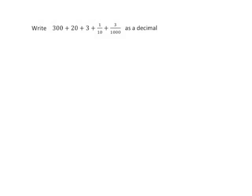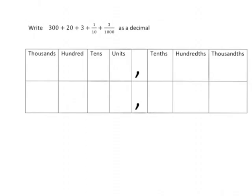If we're asked to write 300 + 20 + 3 + 1/10 + 3/1000 as a decimal, the easiest way to do it is just to quickly put it all into a nice place value table.